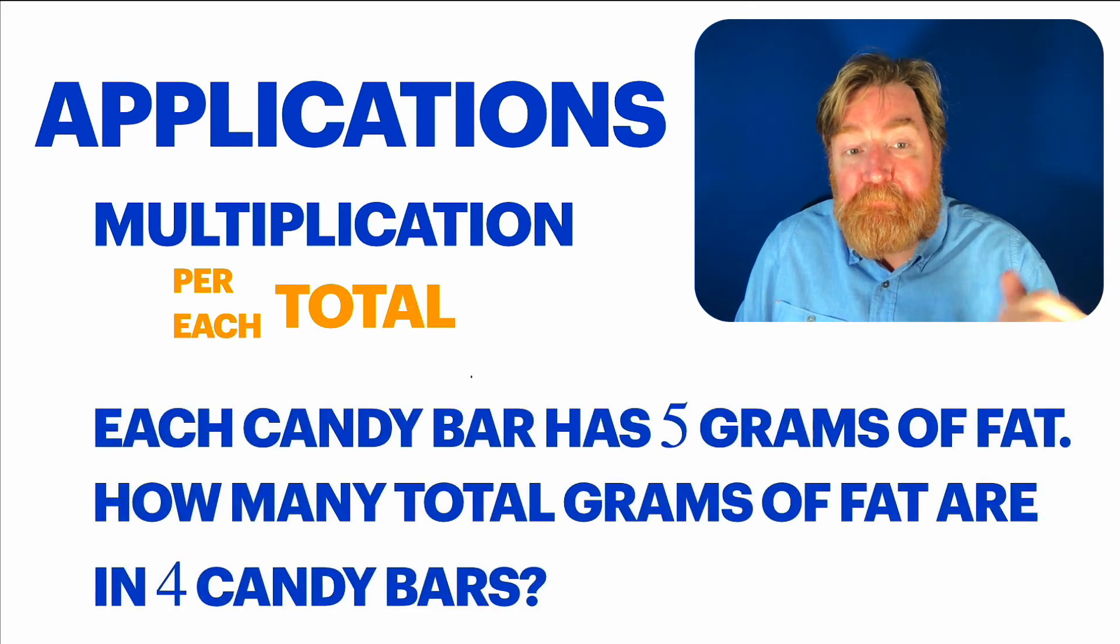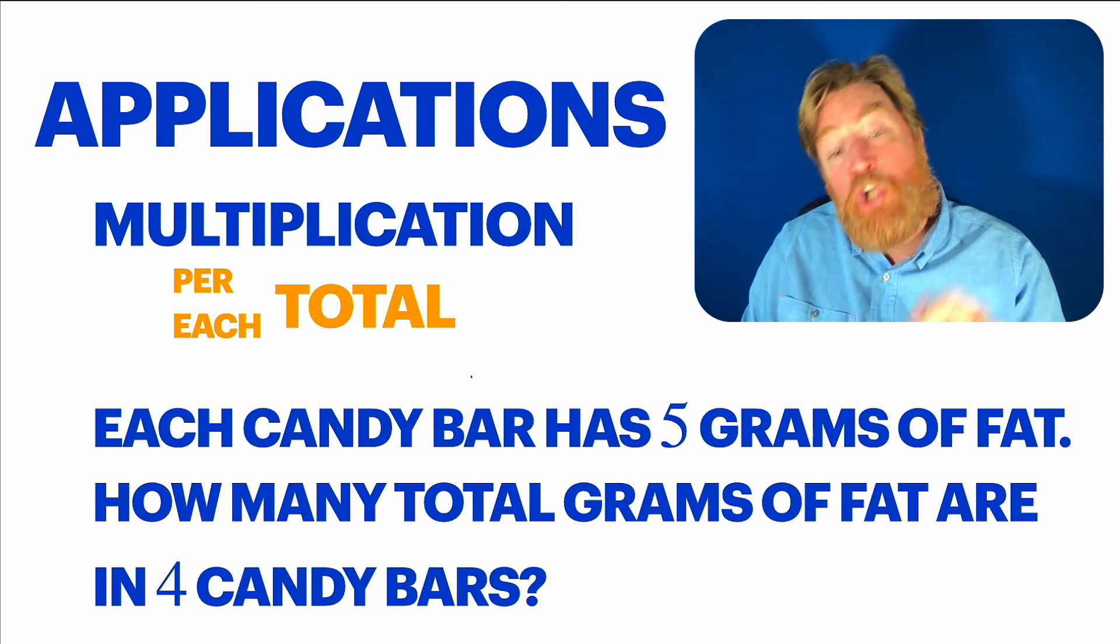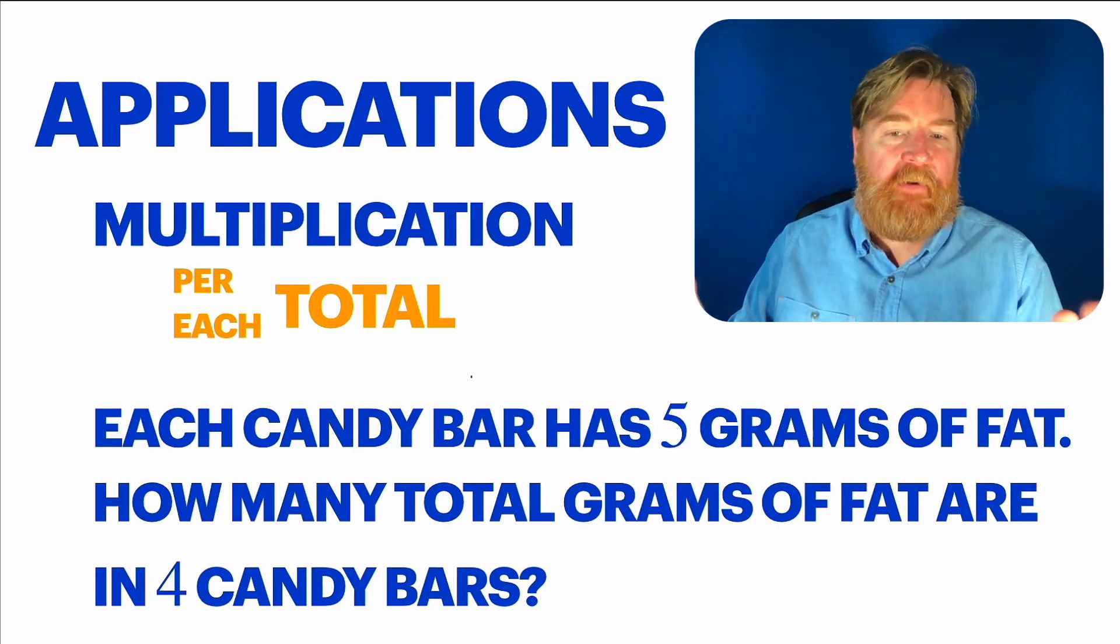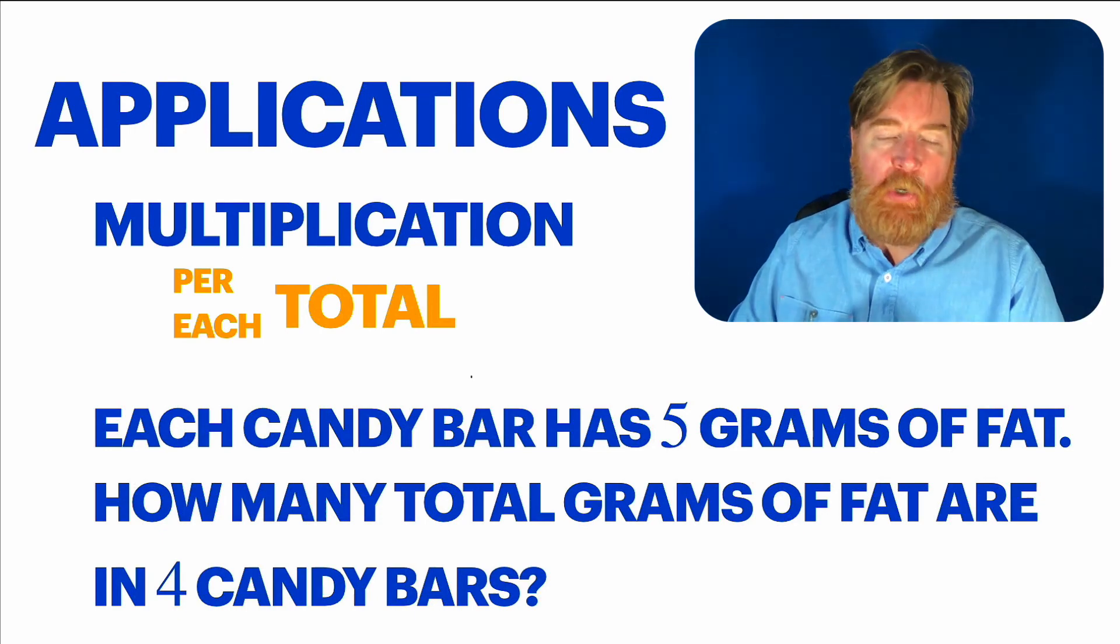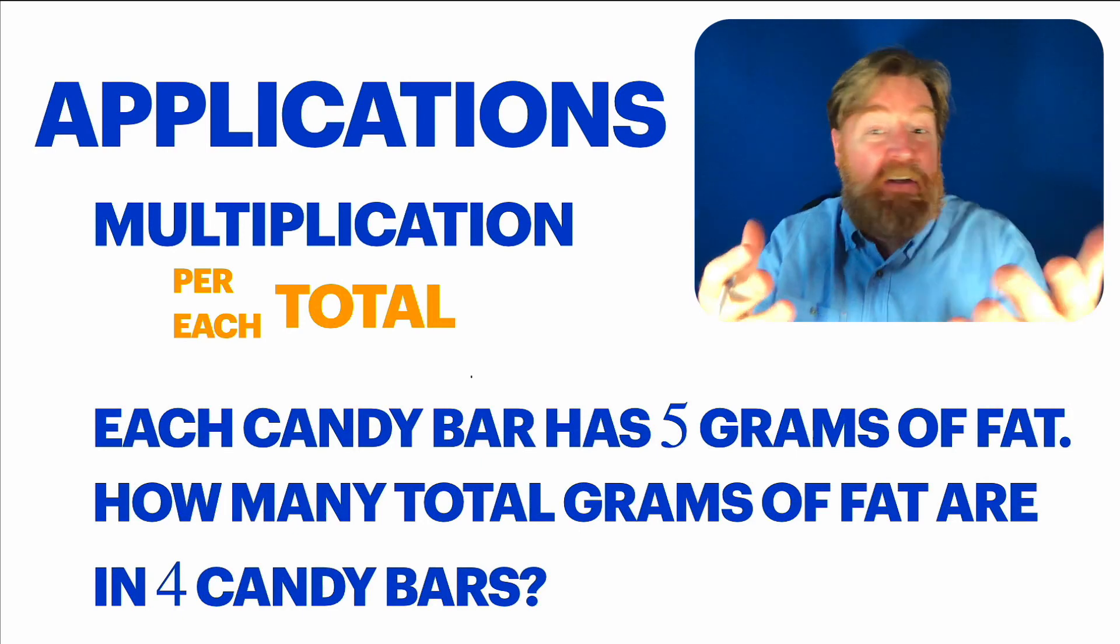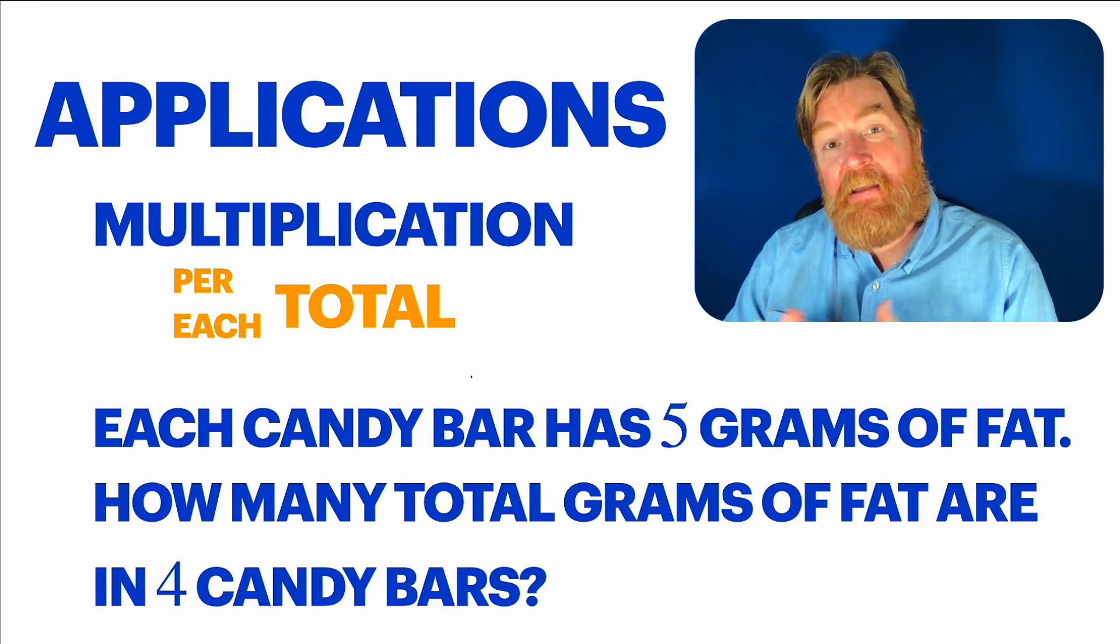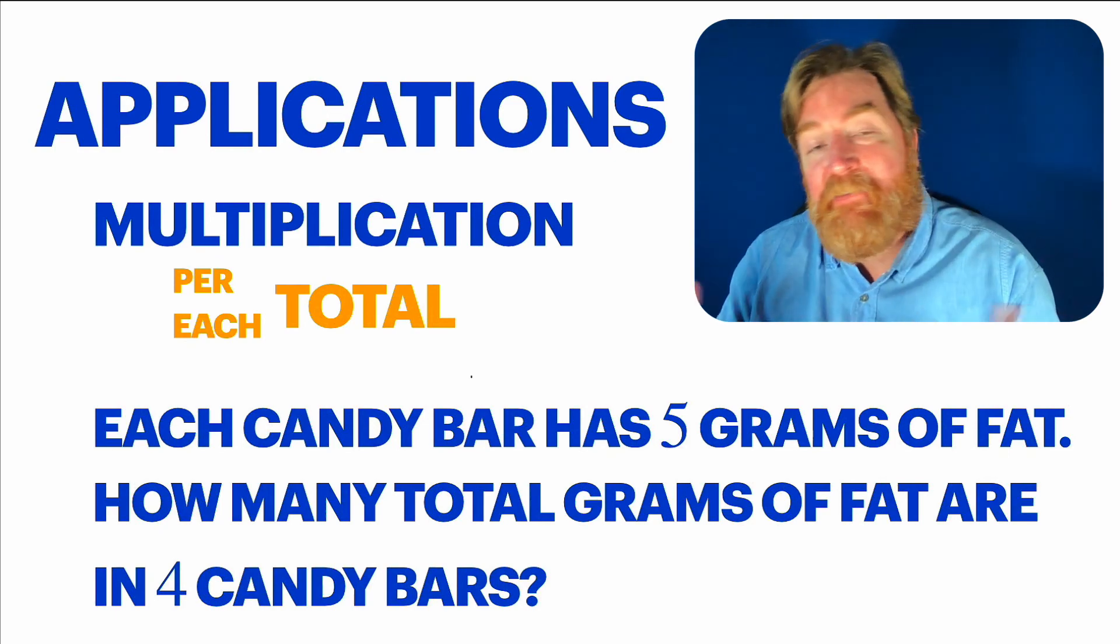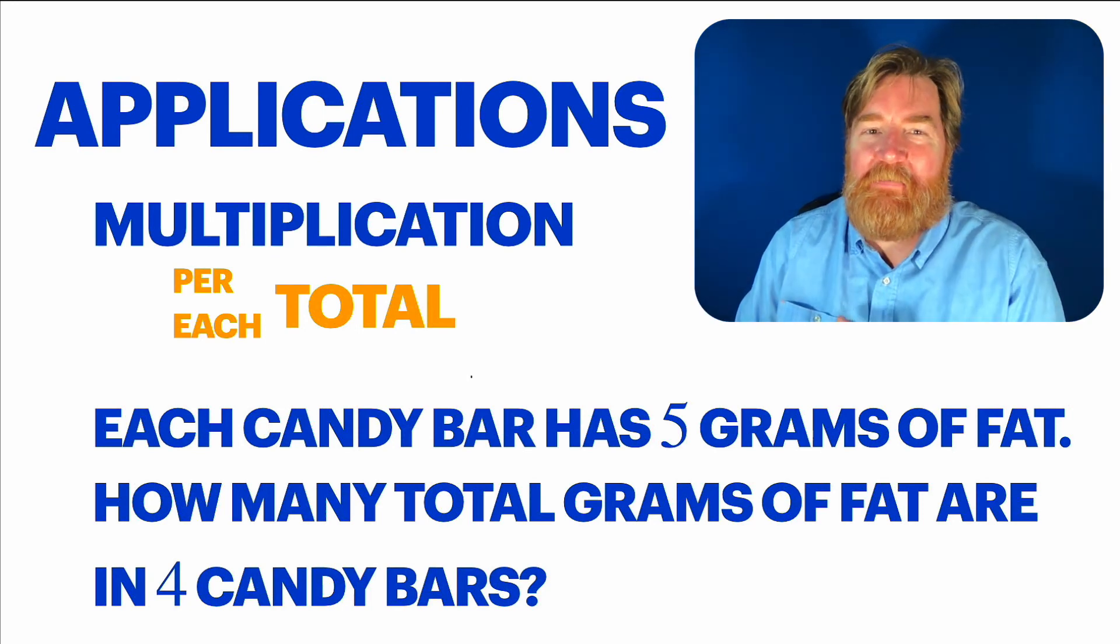Multiplication used there or each candy bar has five grams of fat. How many total grams of fat are there in four candy bars? All right. Well, you take five times four and you get 20, 20 grams total. Now, the cool thing is because we're so comfortable with all these different types of numbers, we could answer a question of this type where it was like each candy bar has 5.6 grams of fat. And how many total grams of fat are there in 4.25 candy bars? We can multiply those decimals just the same. No big deal. We're in awesome shape.